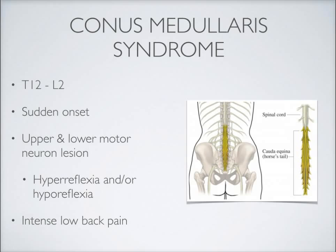Starting with conus medullaris syndrome, this is some sort of compression or destruction within the spinal cord between usually no higher than about the T12 vertebral body region through about as low as the end of the conus medullaris, right around L2. This produces what we call conus medullaris syndrome. Usually it has a sudden onset, many times with intense low back pain, and we're going to see features indicative of both upper motor neuron lesions and lower motor neuron lesions.